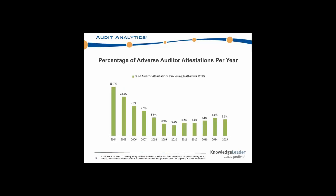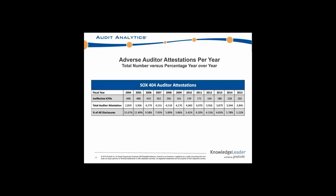Looking at the percentage chart, the 2004 percentage of 15.7% of companies disclosing is by far and away the highest percentage point. This mirrors the trend of the total numbers, dropping down to a low of 3.4% in 2010 that disclosed ineffective internal controls, then slowly peaking again at 5.8% in 2014, and then leveling off and dropping slightly to 5.3% of companies having an adverse auditor attestation. You can see both the total number of companies, the total attestations, and the percentage of those disclosures.